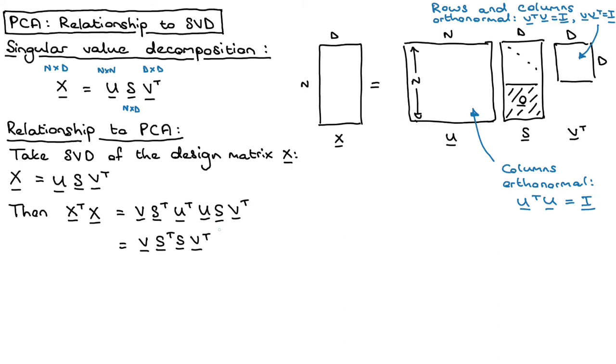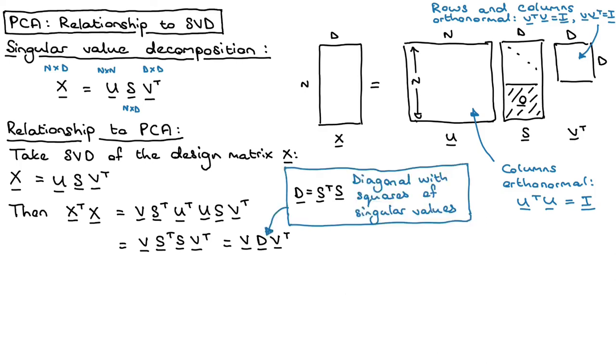And what I will do is I will write that even shorter. So I will write this as V D V transpose. And D here, which is obviously S transpose S, that matrix is just a diagonal matrix with the squares of the singular values.